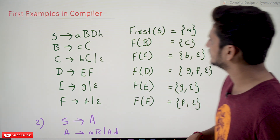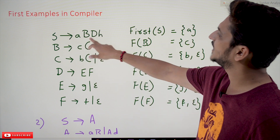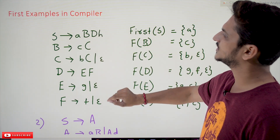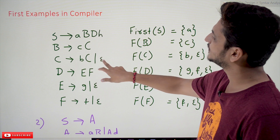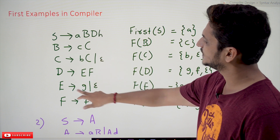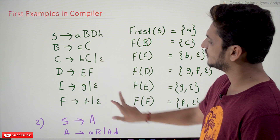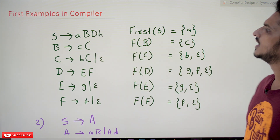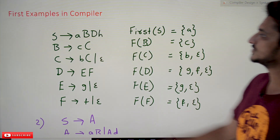Coming to the practice examples: S tends to A B D, B tends to C C, C tends to B C or epsilon, D tends to E F, E tends to G or epsilon, F tends to F or epsilon. This is the context-free grammar that has been given, and we need to identify the FIRST symbols.